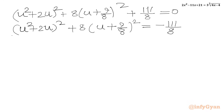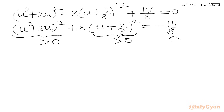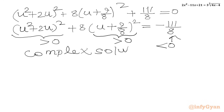The sum of two positive quantities cannot be negative, so this equation yields only complex solutions. Since we are looking for real solutions, we reject this degree 4 equation entirely.